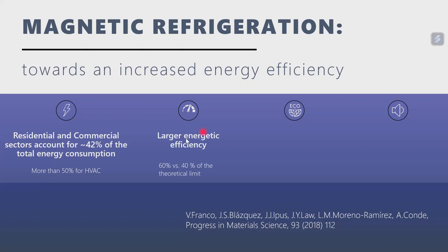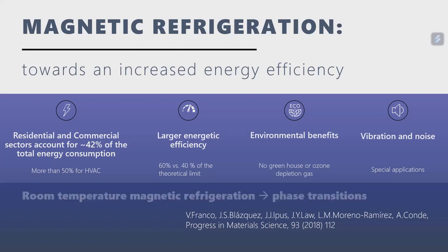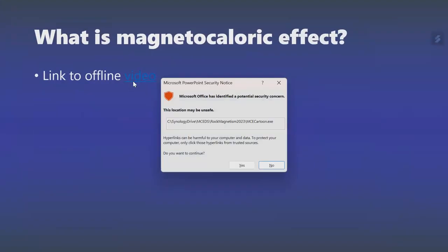There are measurements of energy efficiency of these prototypes — there are no commercial magnetocaloric refrigerators yet, only prototypes — but we can get a significant improvement in efficiency compared to the best fridge or air conditioner at home. We don't have to use greenhouse-effect or ozone-depletion gases, and for some applications it's very important that there is no vibration or noise. There is also a strong link between studying magnetocaloric materials and studying phase transitions in magnetic materials.